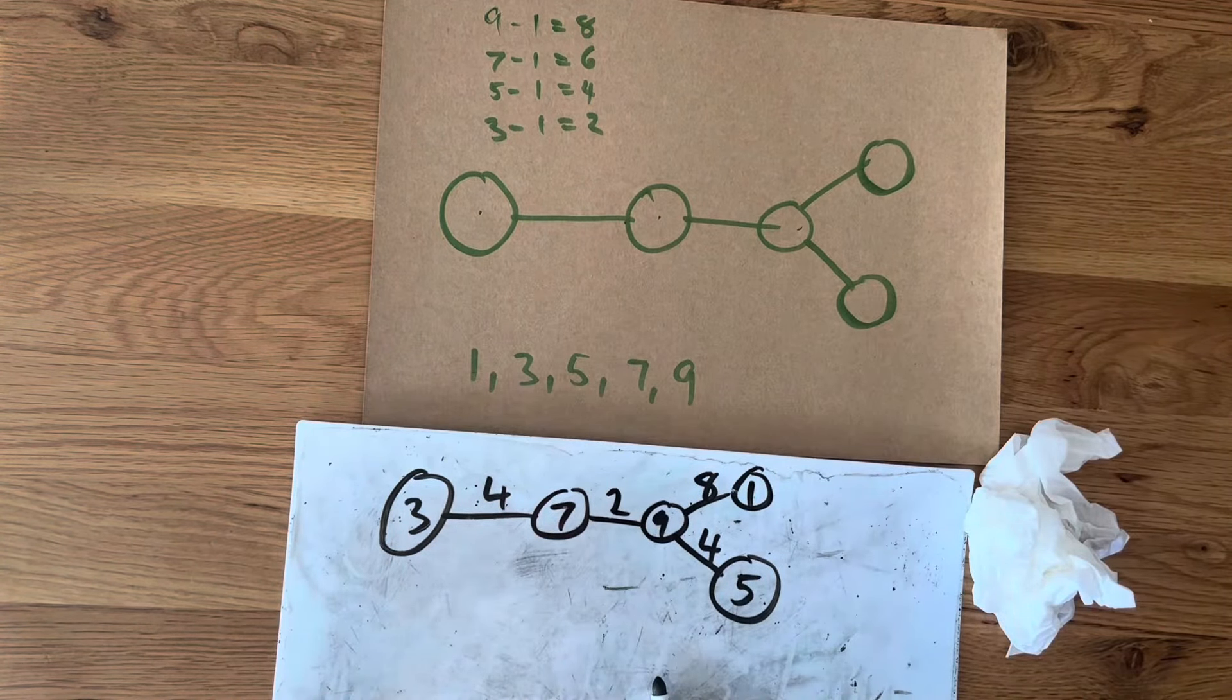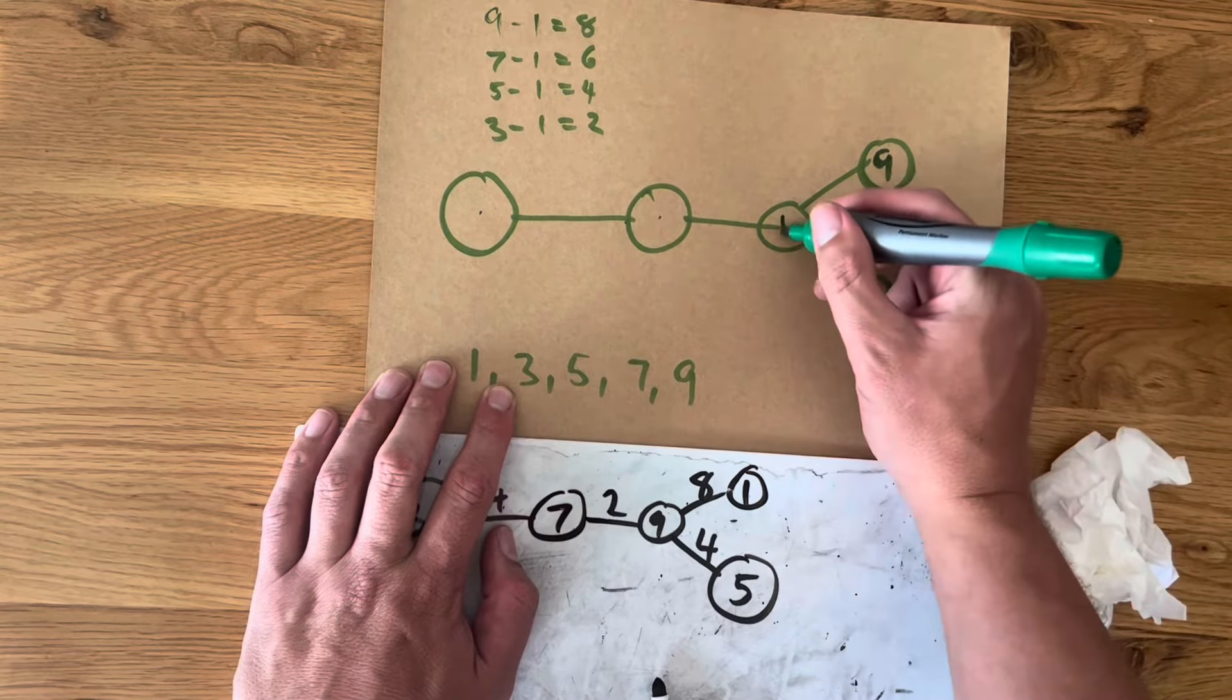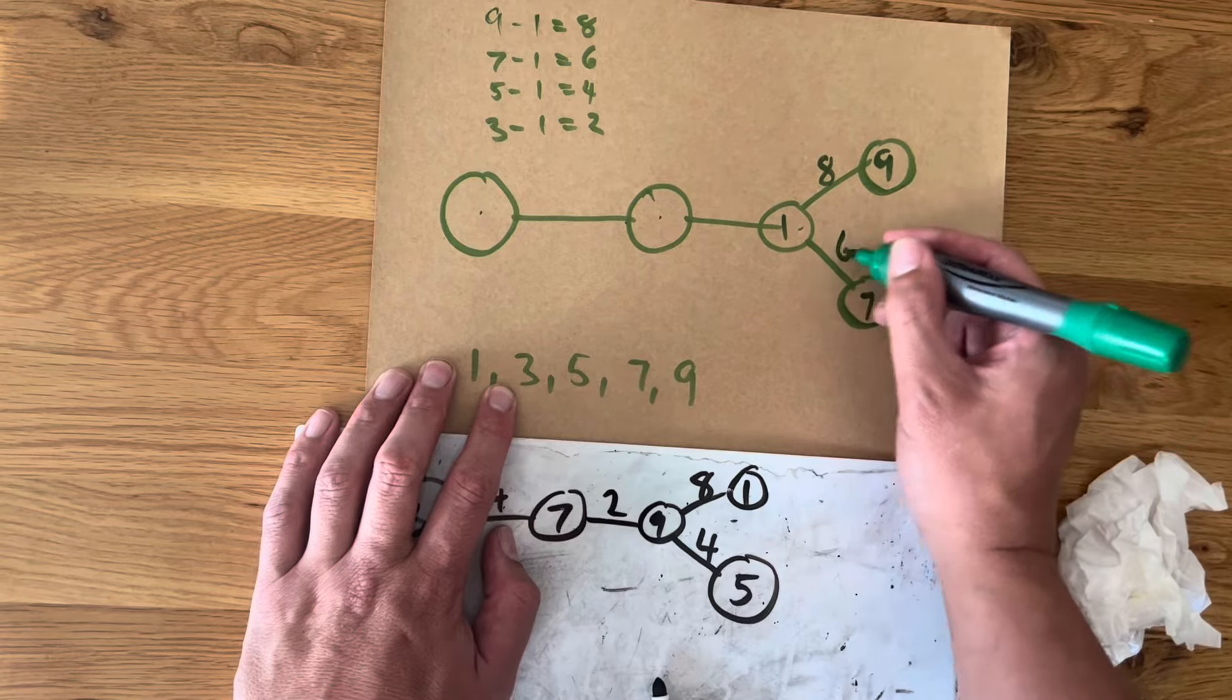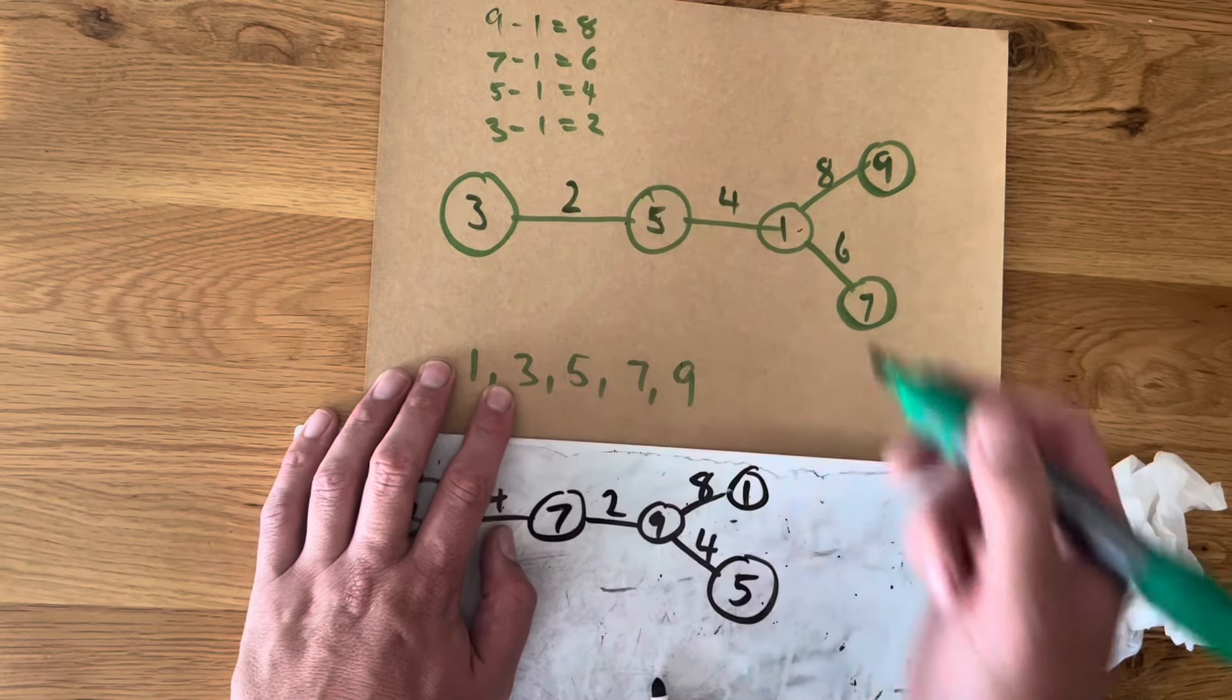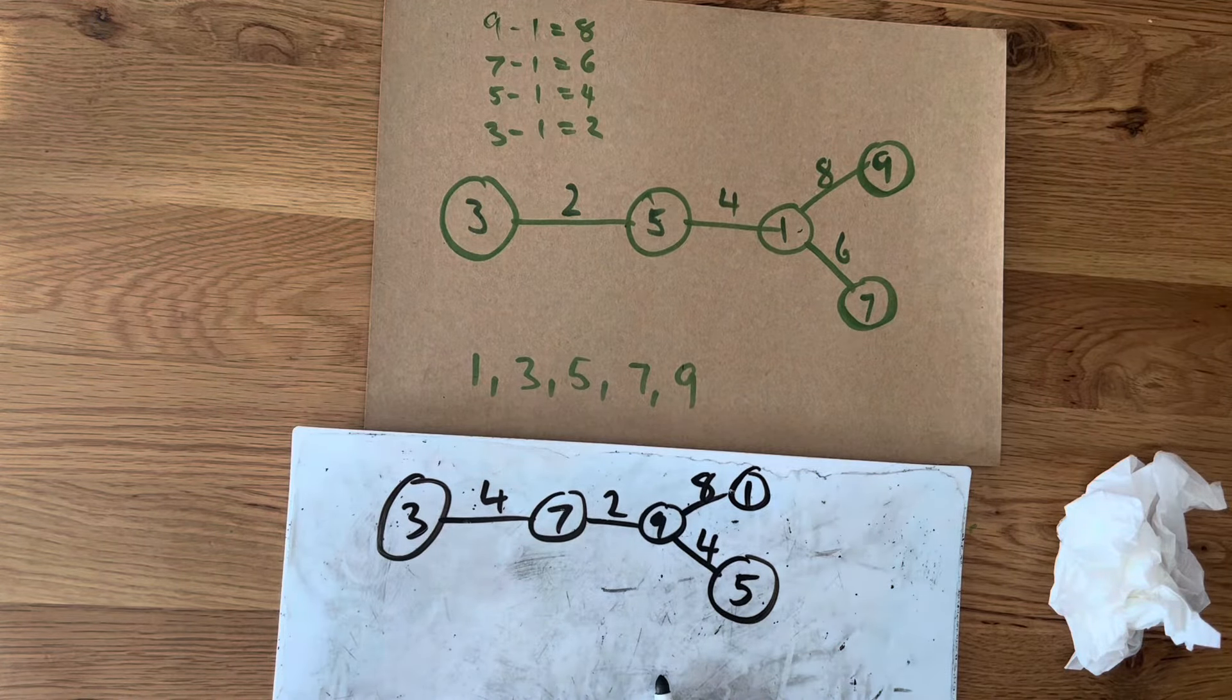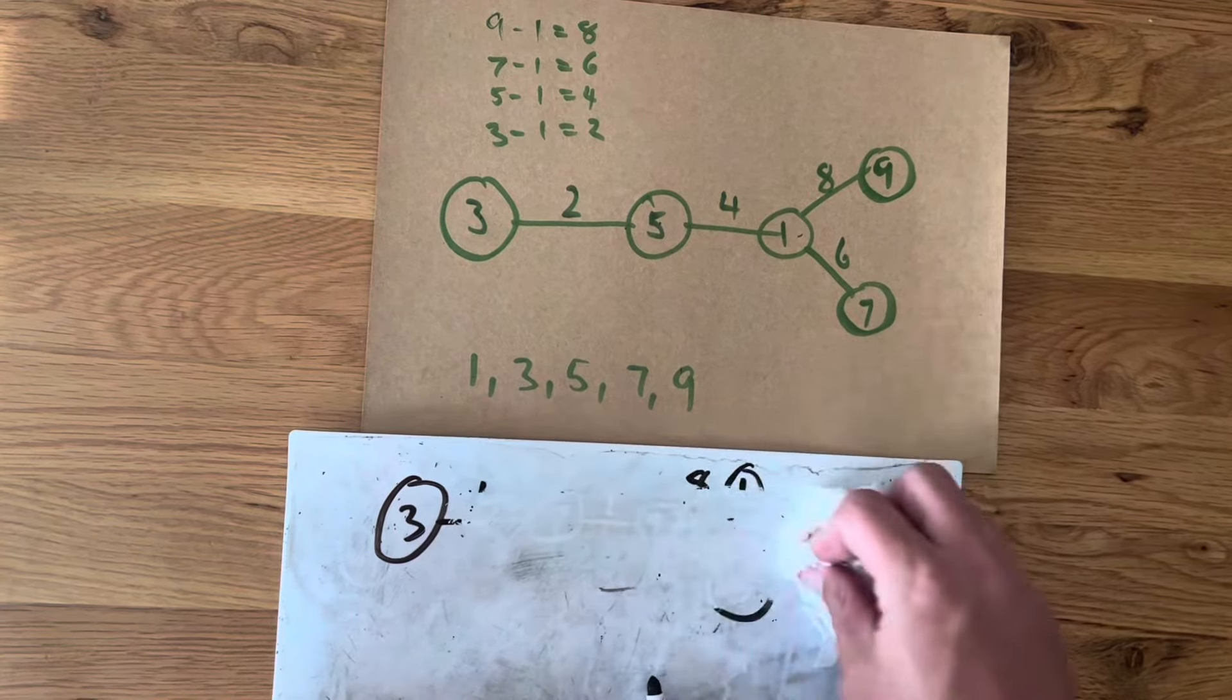So we're not too far off this. So if I pop in 9 up here, and 1 up here, this has a difference of 8. 1 and 7 has a difference of 6. Pop in 5, that has a difference of 4. And I pop in 3 here, and that is a difference of 2. So even for me, this took me a little bit of time before I started filming this video.